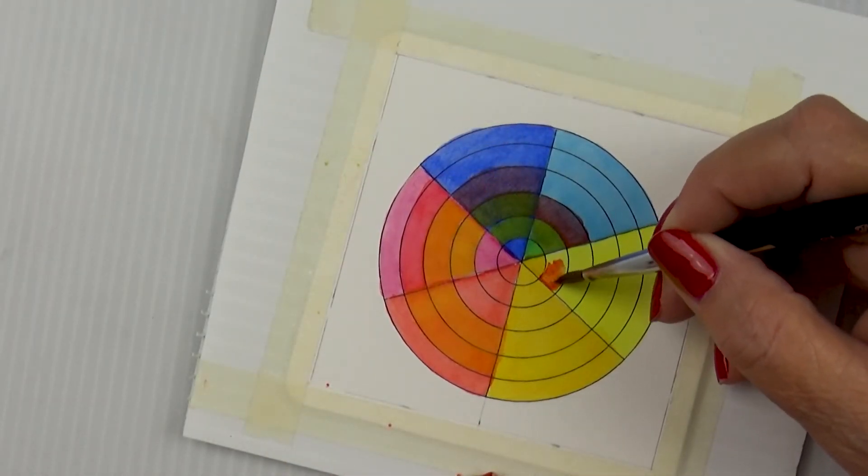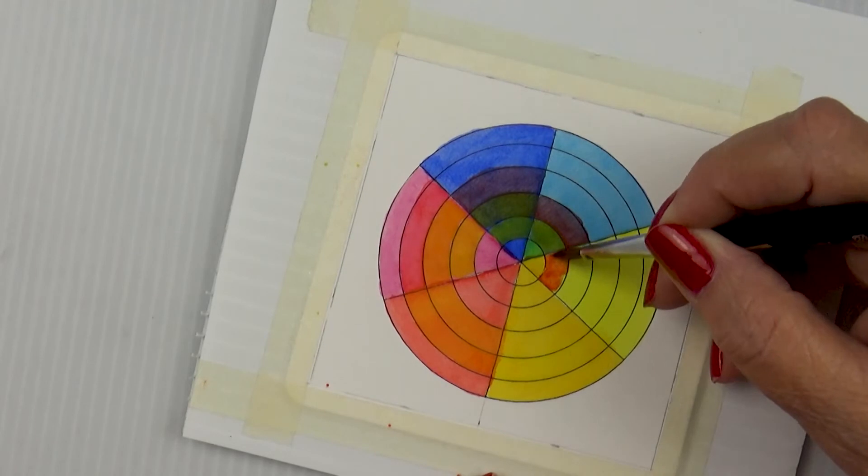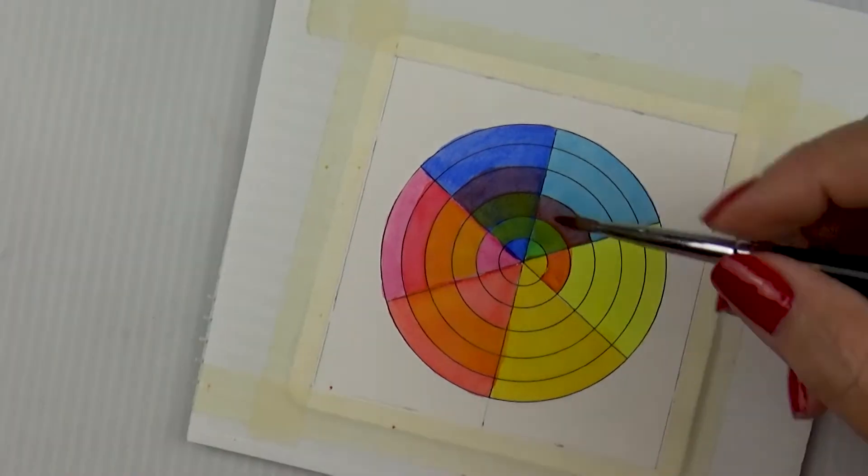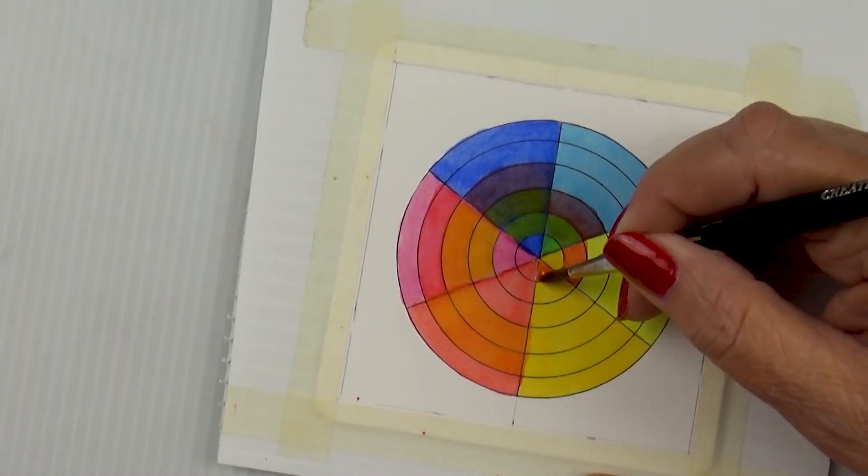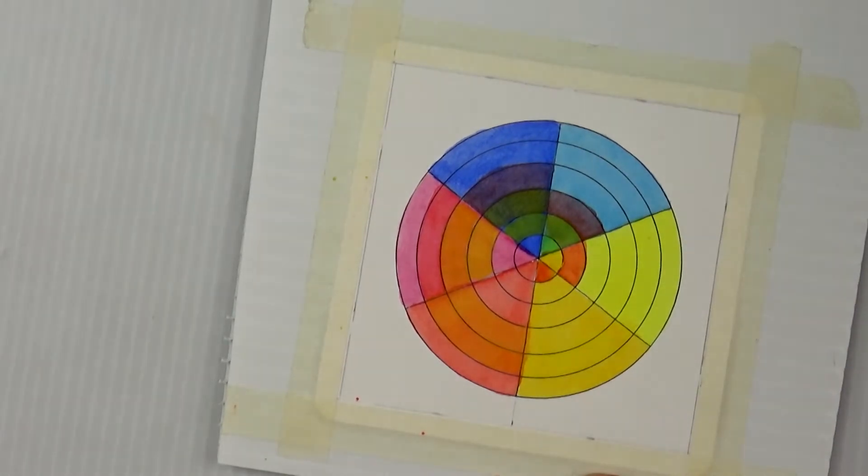Then in the fifth concentric circle of Hansa Yellow Light and then finally in the sixth concentric circle of New Gamboge.